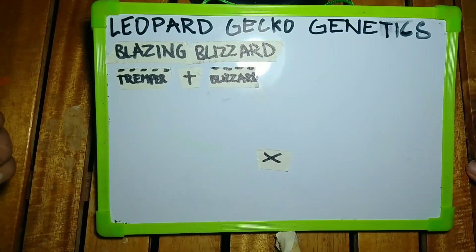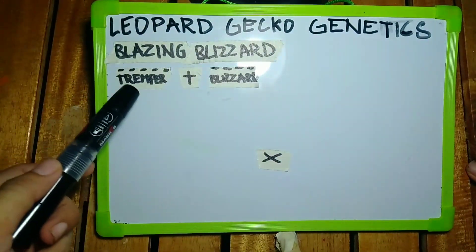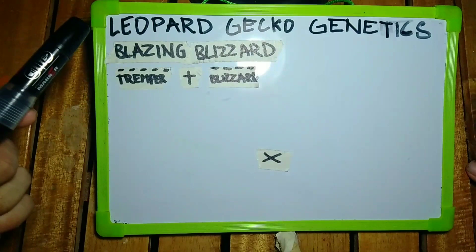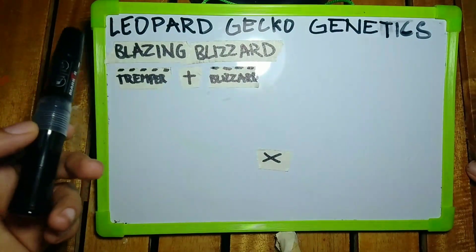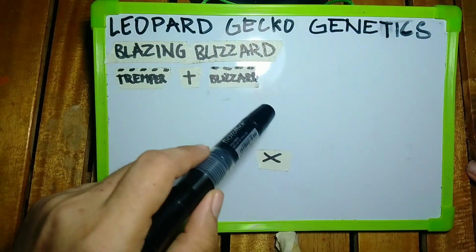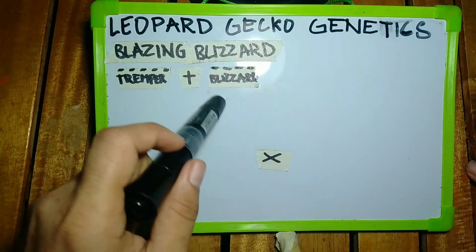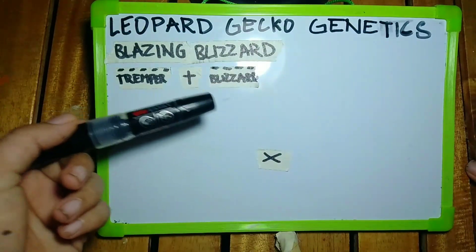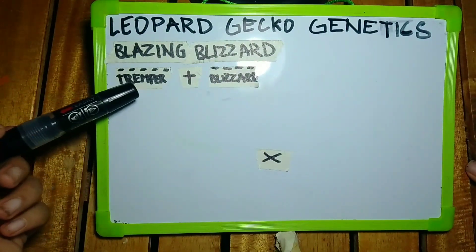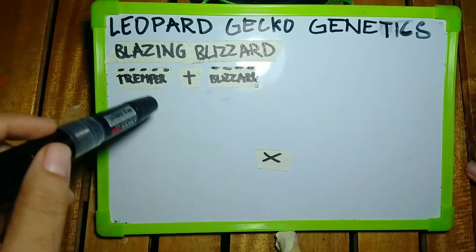Welcome back. Today I'll be teaching you leopard gecko genetics — how to produce blazing blizzard. Tremper and blizzard are recessive genes, so both parents need to carry tremper and blizzard. If you try to combine just a pure tremper albino and a pure blizzard, you might get normal geckos that are heterozygous for both — het tremper and het blizzard — but you won't get blazing blizzard.